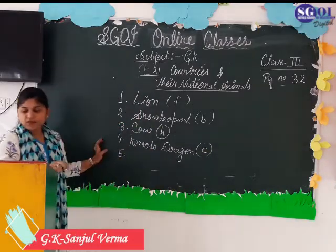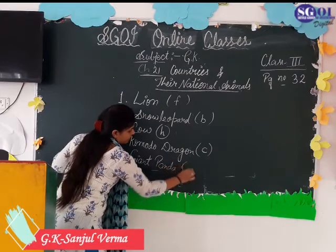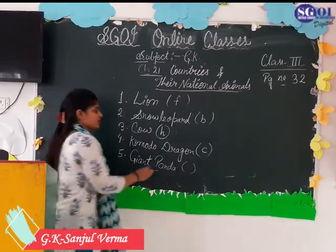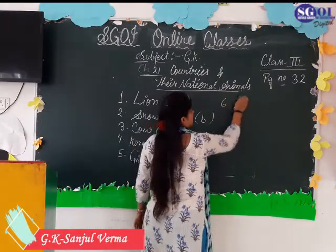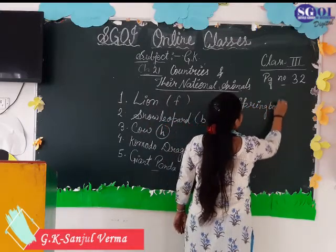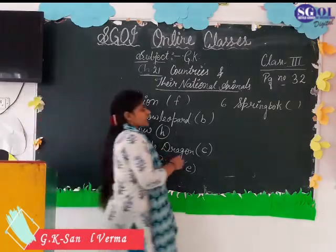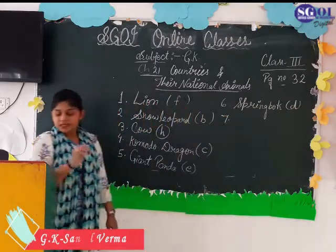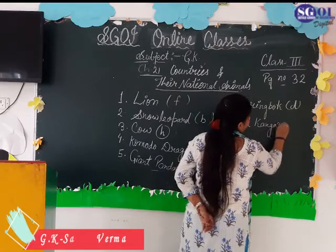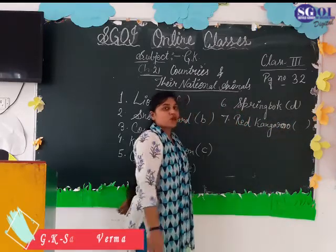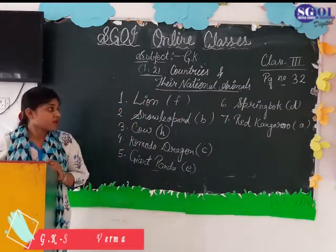Fifth is Giant Panda. Giant Panda is the national animal of China. Write E in the circle. Sixth is Springbok. Springbok is the national animal of South Africa. Write D in the circle. Seventh is Red Kangaroo. Red Kangaroo is the national animal of Australia. Write A in the circle.